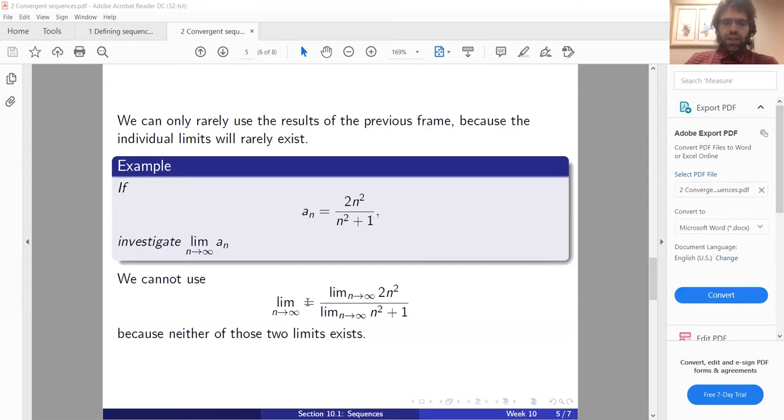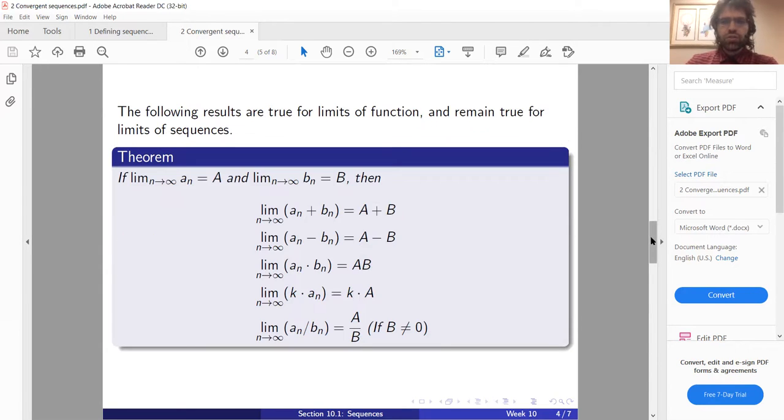What I have as, sorry didn't mean to scroll, rule four here, that we can pull constants out of limits, that will occasionally be useful to us. These first three rules pretty rarely. That being said, these are the exact same rules we have for functions. The limit of a sum of functions is the sum of the limits. The limit of the difference of functions is the difference of limits. The limit of the product of functions is the product of limits.